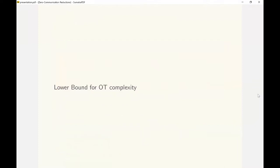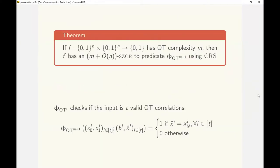We now move on to our results on lower bounds on OT complexity. Our main result in this section shows a construction of a strongly secure ZCR using a two-party secure computation protocol. Concretely, we show that using a 2PC protocol for an n-bit function which uses M OT correlations, we can construct an SZCR...